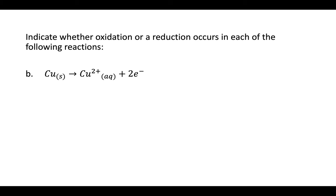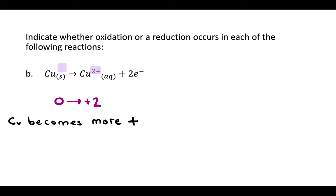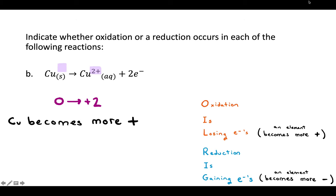Indicate whether oxidation or reduction occurs in the following reaction. We want to see how the charge on our element changes. In this case, our element is copper. Nothing is written at the top right of copper on the left side of the arrow, which means its original charge is 0. On the right side of the arrow, copper has a 2+ charge. So copper went from 0 to a 2+ charge — it became more positive, which means oxidation is happening.